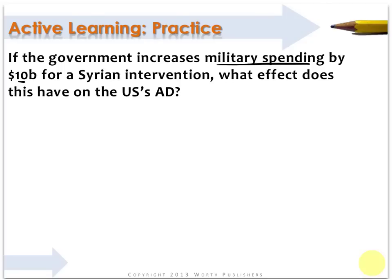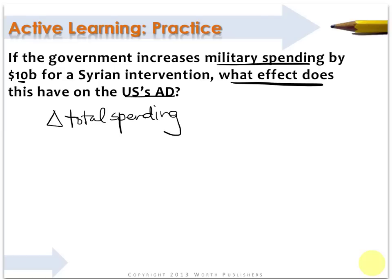First things first. Every single multiplier problem follows this basic framework: you're looking for the change in total spending. The change in total spending equals the change in initial spending multiplied by the multiplier.